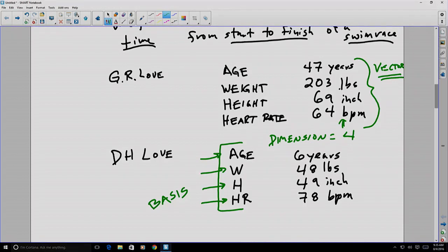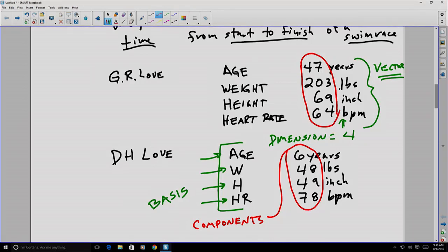While the associated numbers are the components. In this case, the components here are 6, 48, 49, and 78, whereas the components of the vector for the other entity, for Dr. Love, are 47, 203, 69, and 64.